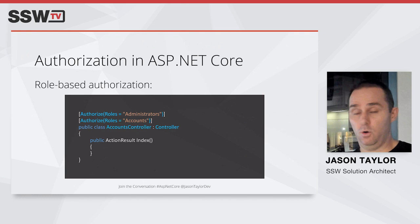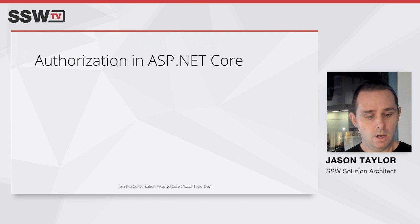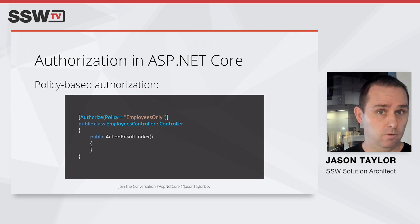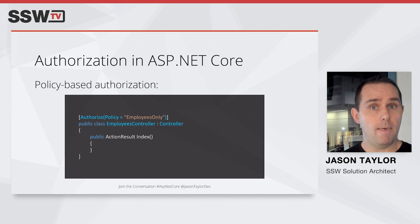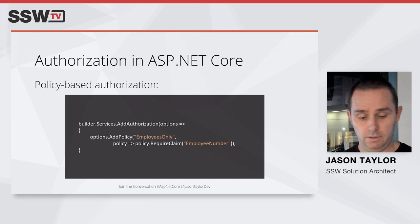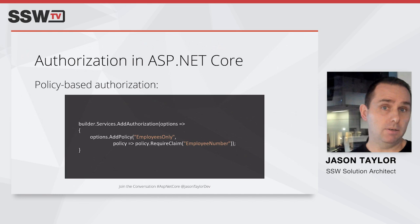Next, we have policy-based authorization with ASP.NET Core, again using the Authorize attribute. In this example, we've specified that the policy to be enforced is the employees-only policy — meaning an authenticated user must meet the requirements of that policy, which we define elsewhere. The simplest way to create a custom policy is to build and register it when registering the authorization service. The employees-only policy has a single requirement: the authenticated user must have an employee number claim — the value doesn't matter, just that they have it.